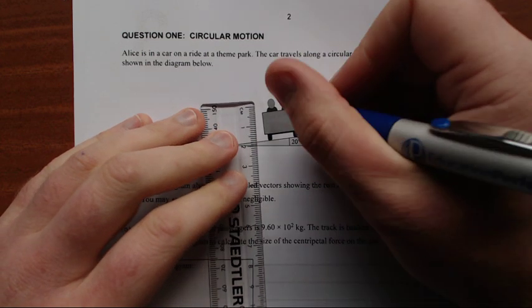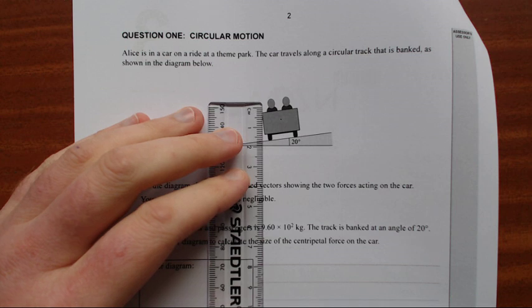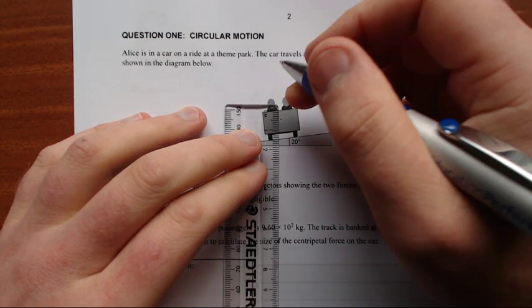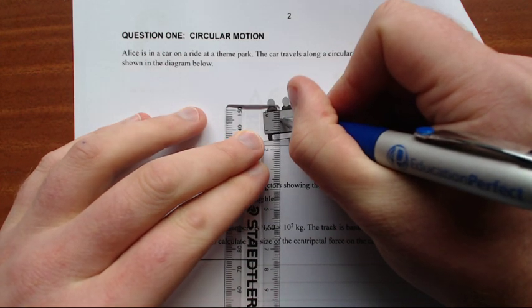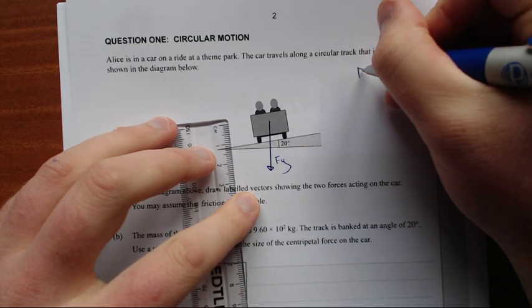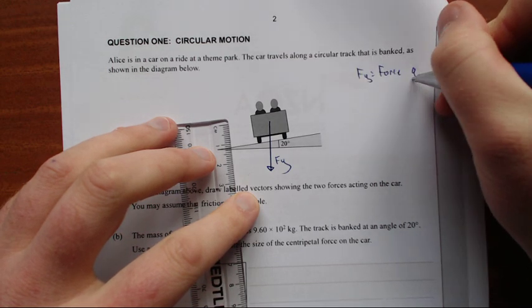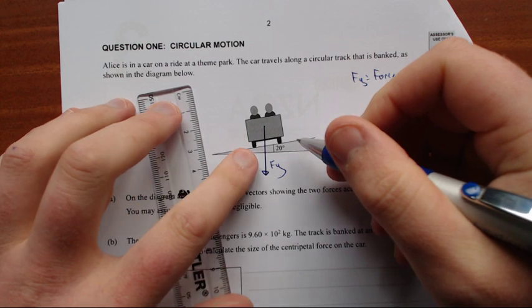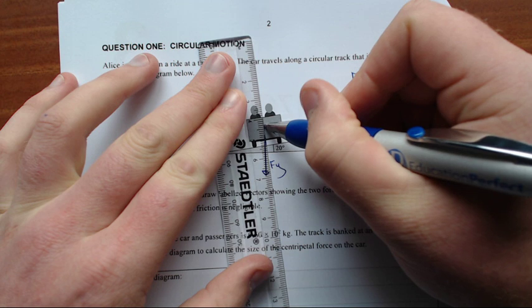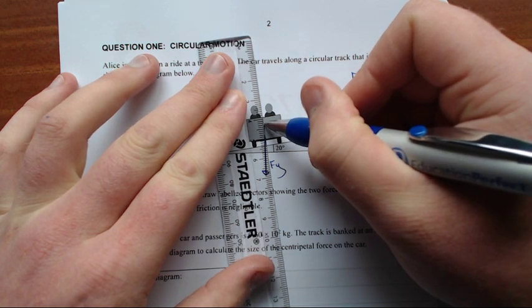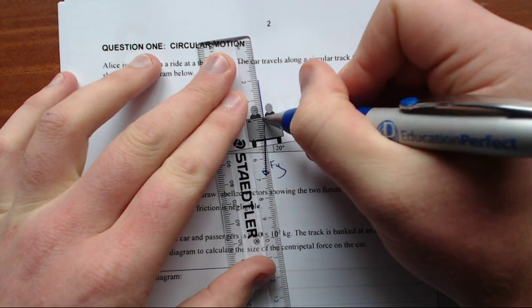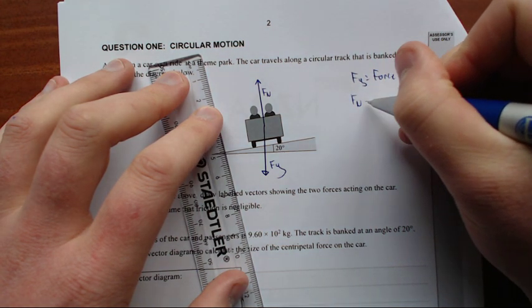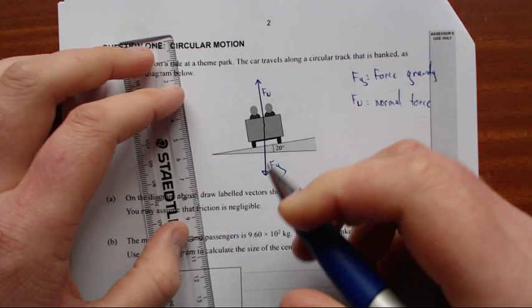On the diagram above draw labeled vectors showing the two forces acting on the car. Assume friction is negligible. Right so we're going to need a ruler for this. I'll put a wee dot just to mark the center of mass, remembering that all vectors come out from the center of mass when we're drawing a free body diagram. So first and foremost we have gravity pointing straight down, Fg. And then we have the normal force which is perpendicular to the surface. So those are two obvious ones. It says there's no friction.